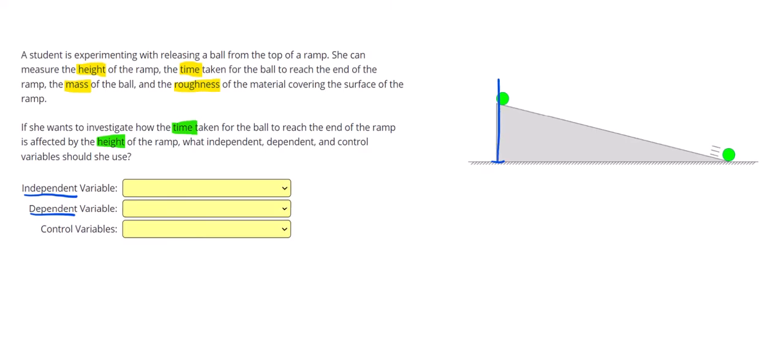So if we think about this, she can vary the height and later she can record the time. But it would be really impossible to do that, to choose the time and then measure the height later.